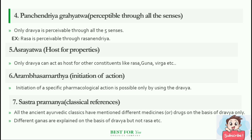Panchendriya Grahyatva, which means perceptible through all the senses. Only Dravya is perceivable through all five senses. For example, Rasa is perceivable only through the rasanendriya.